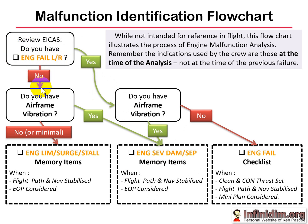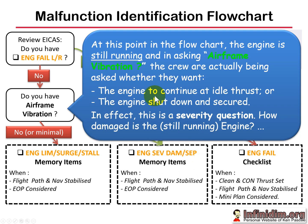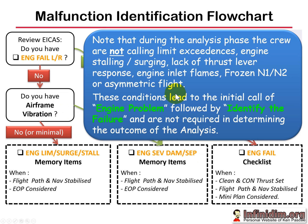Now let's look at the other side of the tree. No engine fail on ICAS means by implication the engine is still running. The flowchart asks: do you have airframe vibration? This question leads you to one of two things: either come down here, leave the engine running, and reduce thrust - that's what the limit/surge/stall memory items do - or if there's airframe vibration, run engine severe damage/separation, which reduces thrust to idle, shuts the fuel control off, pulls the engine fire switch, and shuts the engine down. This is essentially a severity question.